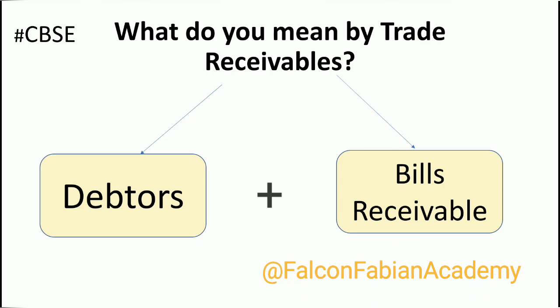Let's do a quick recap. Trade receivables is the sum of debtors and bills receivable. A debtor is a person, firm, or entity to whom goods have been sold on credit. Bills receivable is a bill of exchange accepted by a debtor for a specified sum to be paid on a specified date.